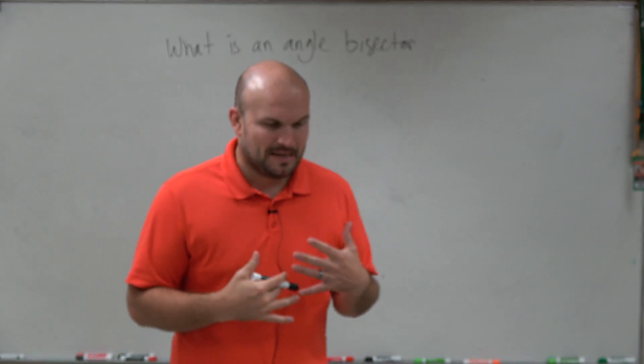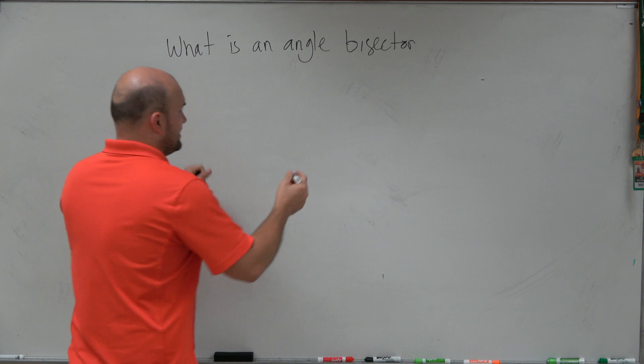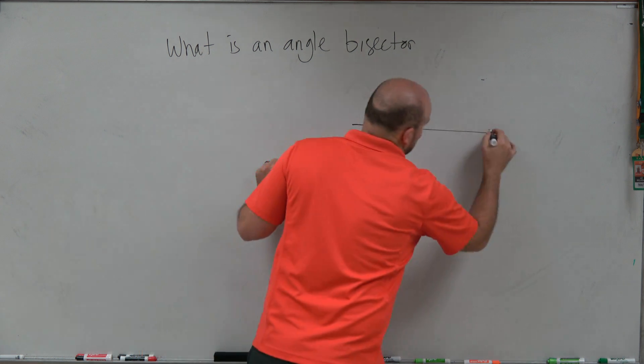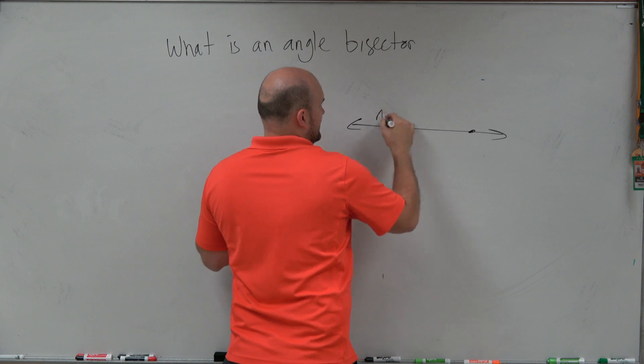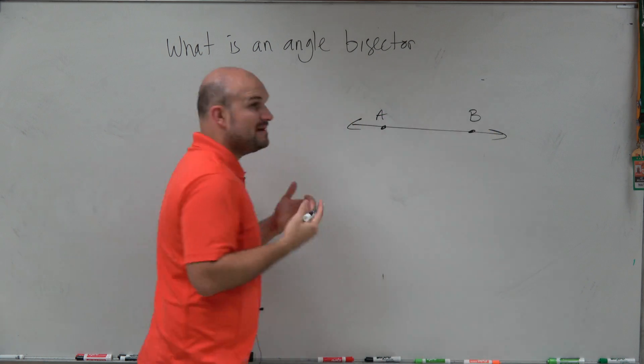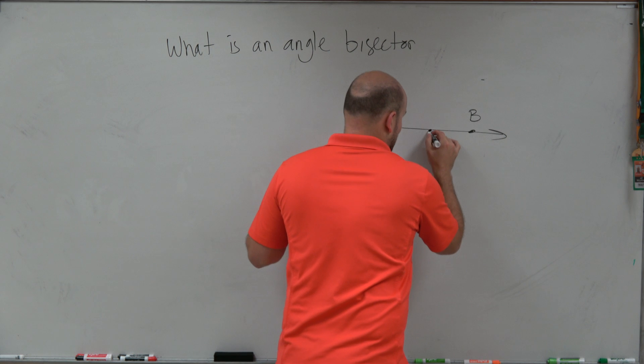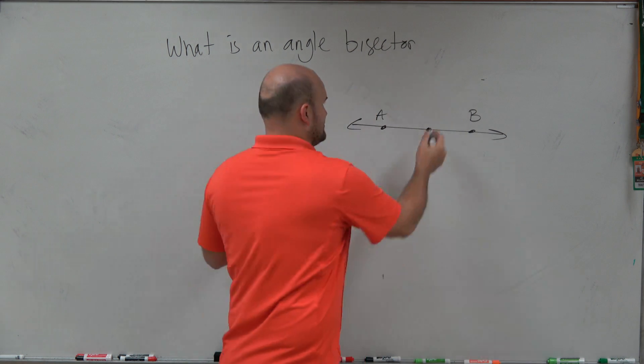And the best way I can introduce you to the bisector is going back to the midpoint. If you remember we looked at the midpoint, if you have like a line and you have two points here, A and B, well the midpoint is going to be the point that's right in the middle of those two points, which we'll call C.